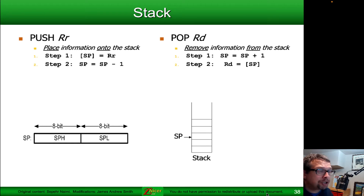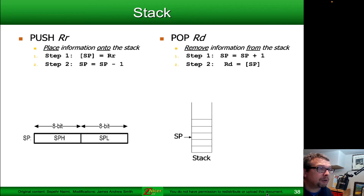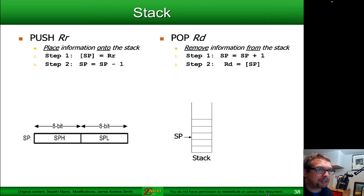When we push, we are first taking the contents of a register and placing it in a location pointed to by the stack pointer. That's step one. After that, we decrement the value on the stack pointer. The decrementing and incrementing of the stack pointer is very specific to particular chips and architectures. In this particular case, we're going to say that the stack pointer is decremented when we push.